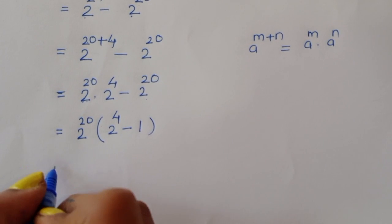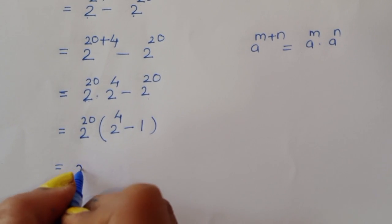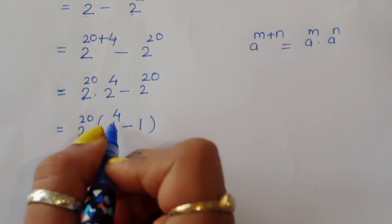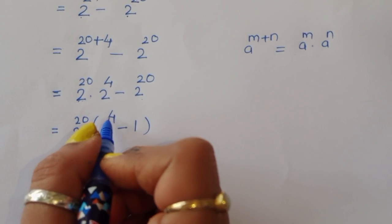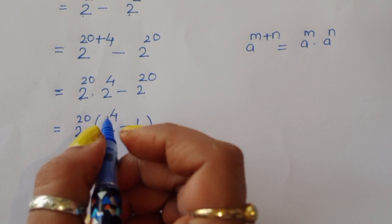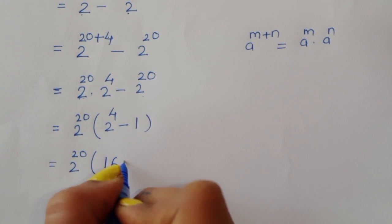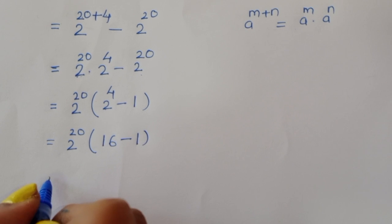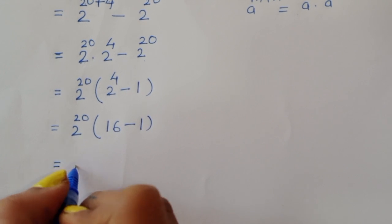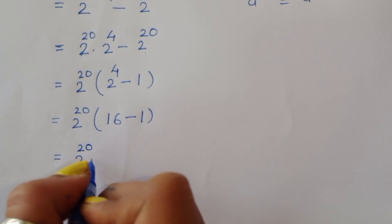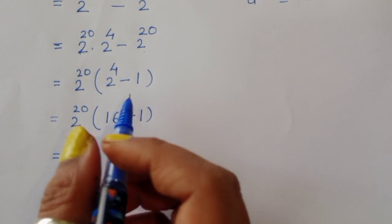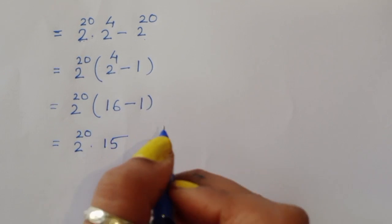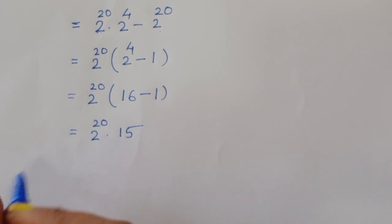So we get 2 power 20 times 2 power 4 minus 1. The value of 2 power 4 is 16, and 16 minus 1 is 15. So this equals 2 power 20 times 15.